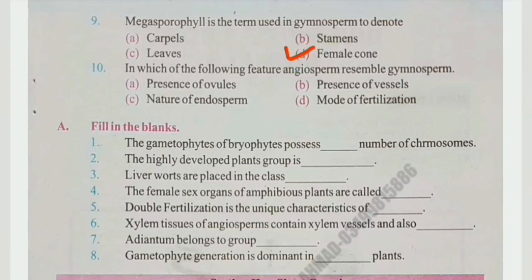Last MCQ: In which of the following features do angiosperms resemble gymnosperms? That is, what character is the same in angiosperms and gymnosperms? The right answer is A, presence of ovules.